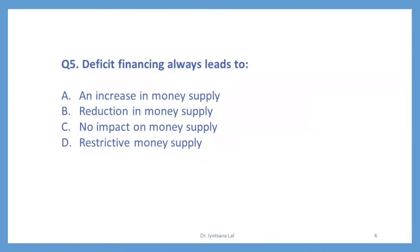Question number 5. Deficit financing always leads to. You should know what is deficit financing. The options are: an increase in money supply; reduction in money supply; no impact on money supply; or restrictive money supply. Deficit financing is a tool of the central bank to meet the extra expenditure of government through printing more currencies. By printing more currencies, RBI increases the money supply in the economy. So the correct option is A — an increase in money supply.